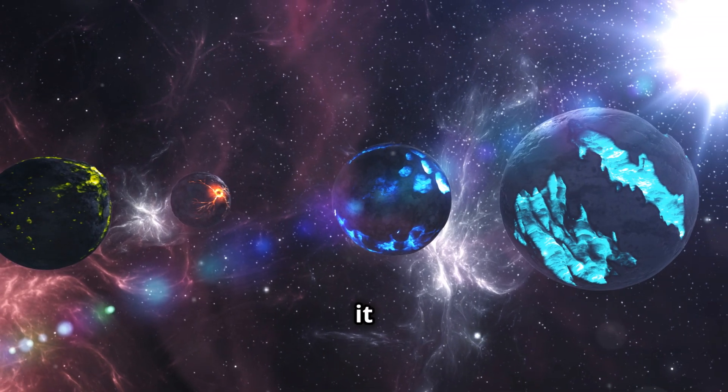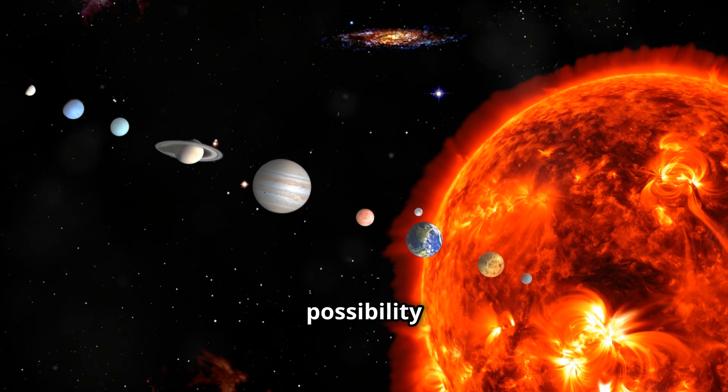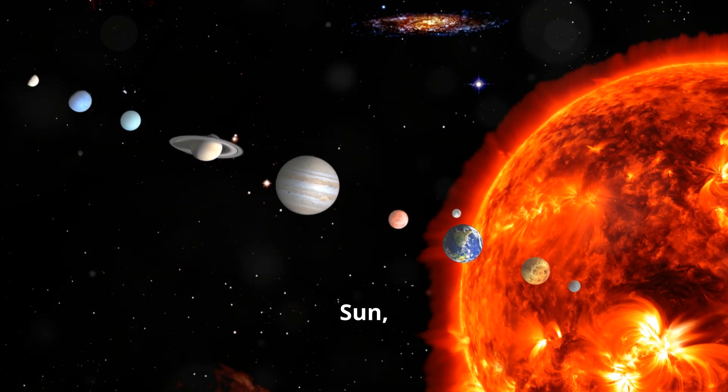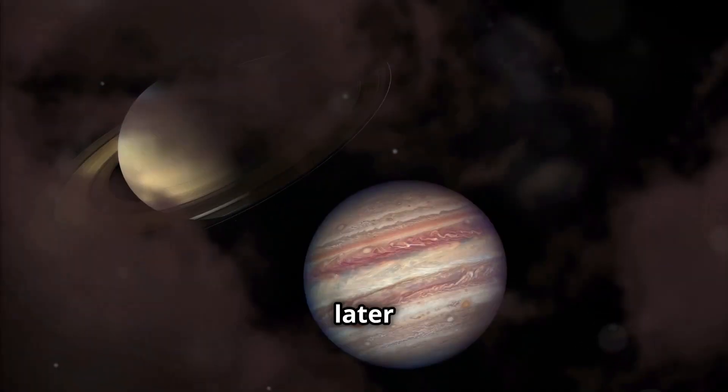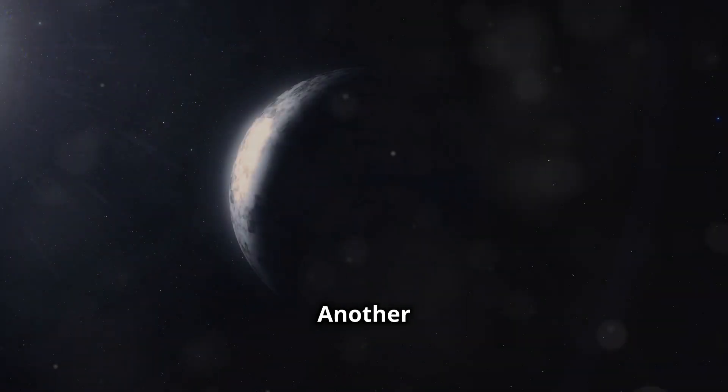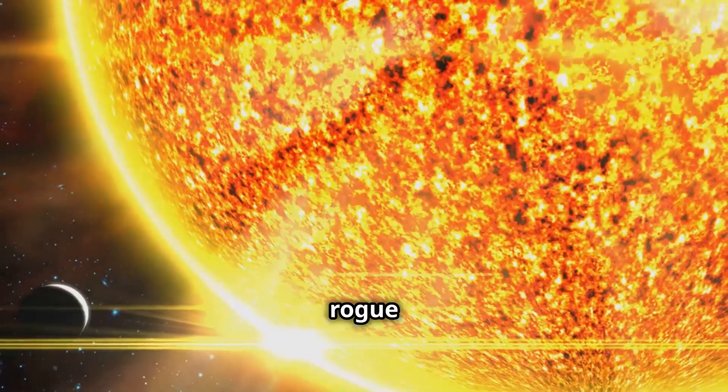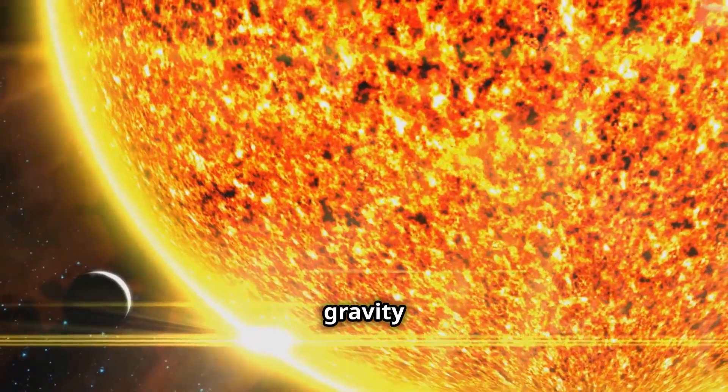If Planet Nine exists, where did it come from? Astronomers have a few theories. One possibility is that it formed closer to the sun, alongside the other planets, but was later flung outward by the gravitational pull of Jupiter or Saturn. Another theory suggests that Planet Nine is a cosmic interloper, a rogue planet captured by the sun's gravity long ago.